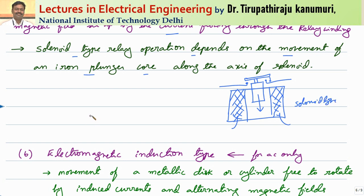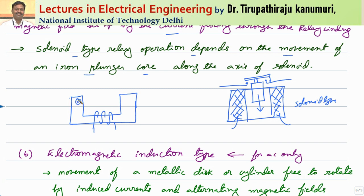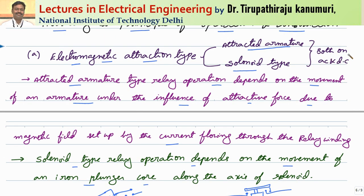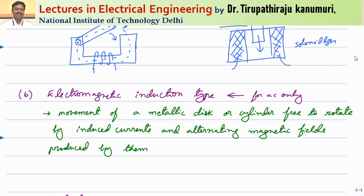Coming to the attracted armature type — there is a coil and an iron bar with contacts attached. Whenever the coil is energized, the magnetic field will attract the iron bar, which moves and closes the two contacts. Because these are based on attractive force, the electromagnetic attraction type can be used both for AC as well as DC.